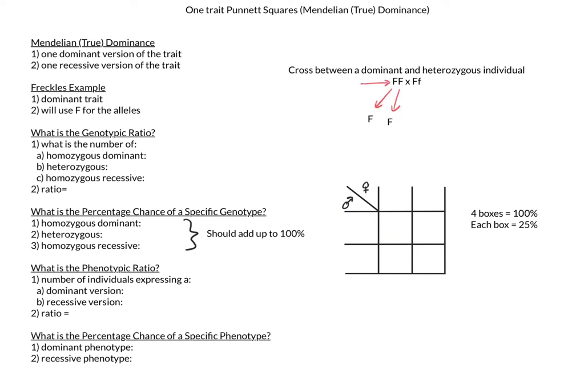Now the male can only give off big F's, and the female can still give either a big F or a little f. Let's make our Punnett square. Let's add our signs and put in their alleles. Now let's solve the Punnett square. Top left will be big F, big F. Top right will be big F, little f. Bottom left will be big F, big F. And bottom right will be big F, little f.